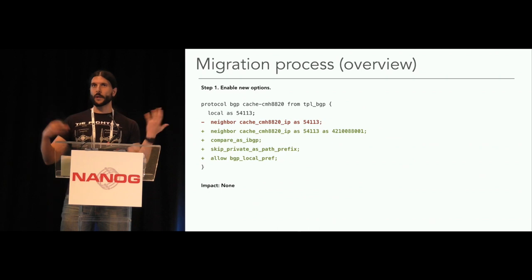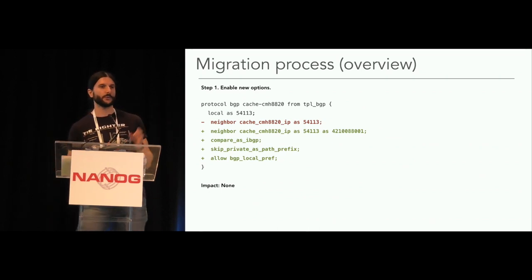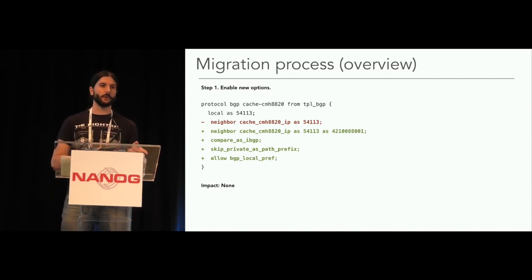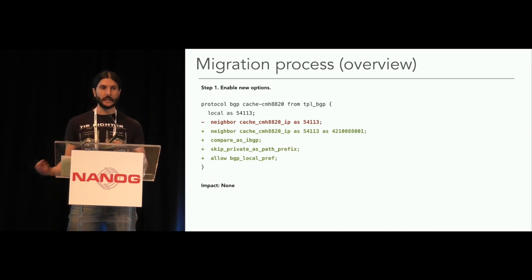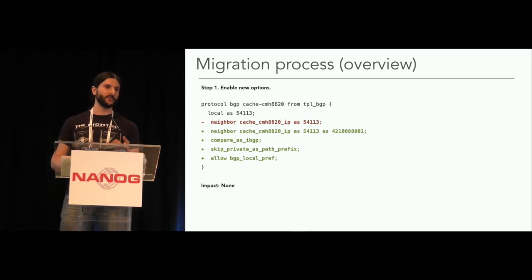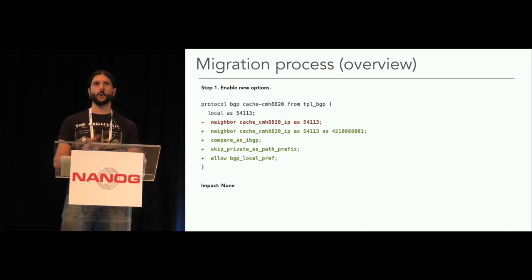We developed another knob called 'skip private AS path prefix', which when computing the length of the AS path, ignores all the leading private ASes. Because the leading AS in the AS path is 65000, that gets ignored and the length of both prefixes becomes the same. And finally, we were using local-pref to signal various things in the network, and eBGP doesn't transport local preference. So we added another knob to transport local-pref between eBGP speakers. Now that we have all these knobs, the migration process is straightforward: in step one, enable the secondary AS and all the other knobs — compare-as-IBGP, skip-private-AS-path-prefix, allow-BGP-local-pref. This change is completely innocuous and has no impact, so you can deploy it everywhere without any maintenance.